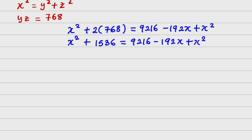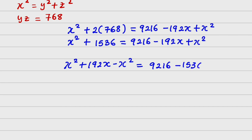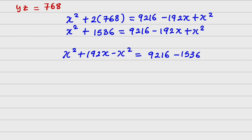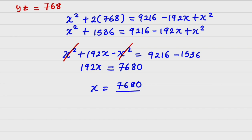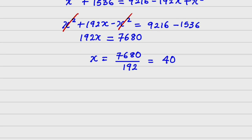Collecting like terms: x squared minus x squared plus 192x equals 9216 minus 1536. The x squared terms cancel, giving 192x equals 7680, so x equals 7680 divided by 192, which gives us x equals 40.